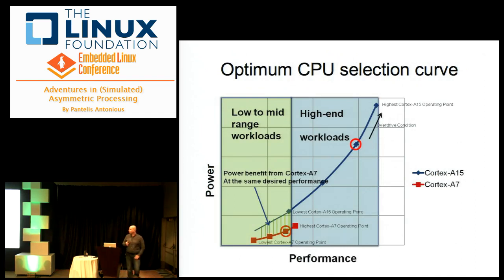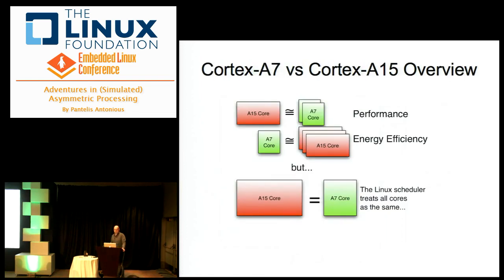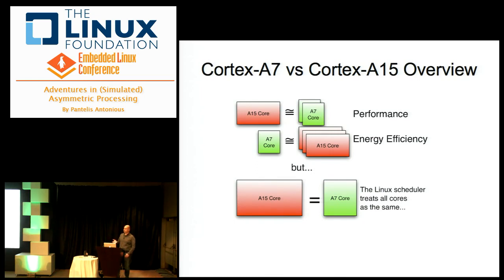From one of ARM's white papers: when you have low workloads, just run them on the A7; if you have high workloads, run them on the A15. But it's not as easy as it appears. A single A15 core is about two times the performance of the A7, and the A7 is about three times more power-efficient than the A15 — though that's a rough approximation because different workloads, for example NEON tasks, run much faster on the A15. But the scheduler just thinks everything is the same, and that's not good.